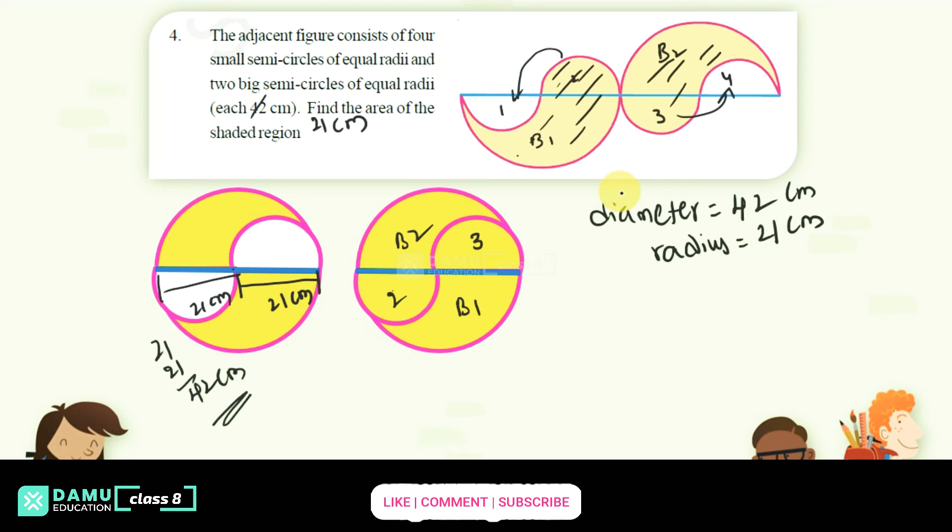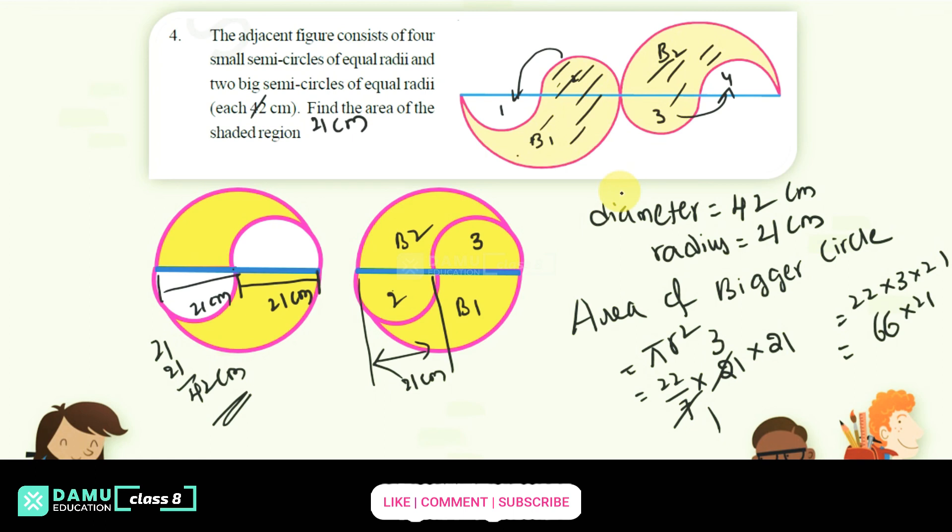If you find the area of the bigger circle, that is π r squared, so 22 by 7 into r, which is 21 into 21. The radius of the bigger circle from here to here is 21 centimeter. So 7 threes are 21, then 22 into 3 into 21. 3 twos are 6 into 21, so 66 into 21, which equals 1386 centimeter square. That is the answer, area of the shaded region.